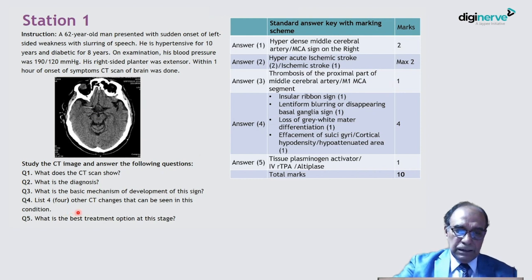Next, list 4 other CT changes that can be seen in this condition. In this condition means early ischemic stroke. So there are so many features of early CT changes. You can write from memory. That is insular ribbon sign.